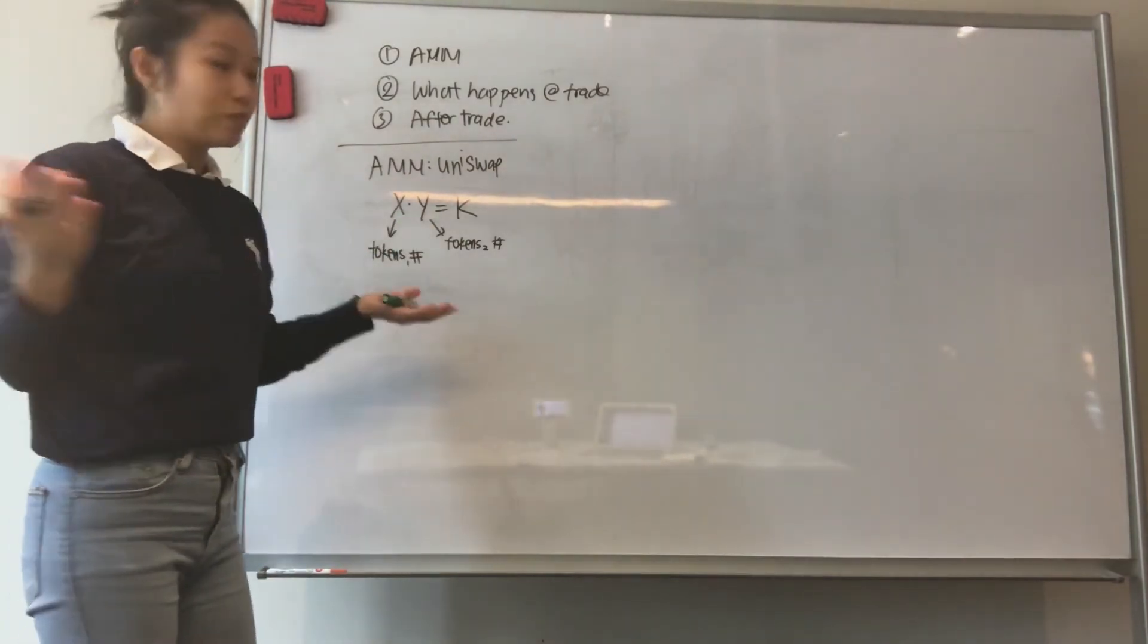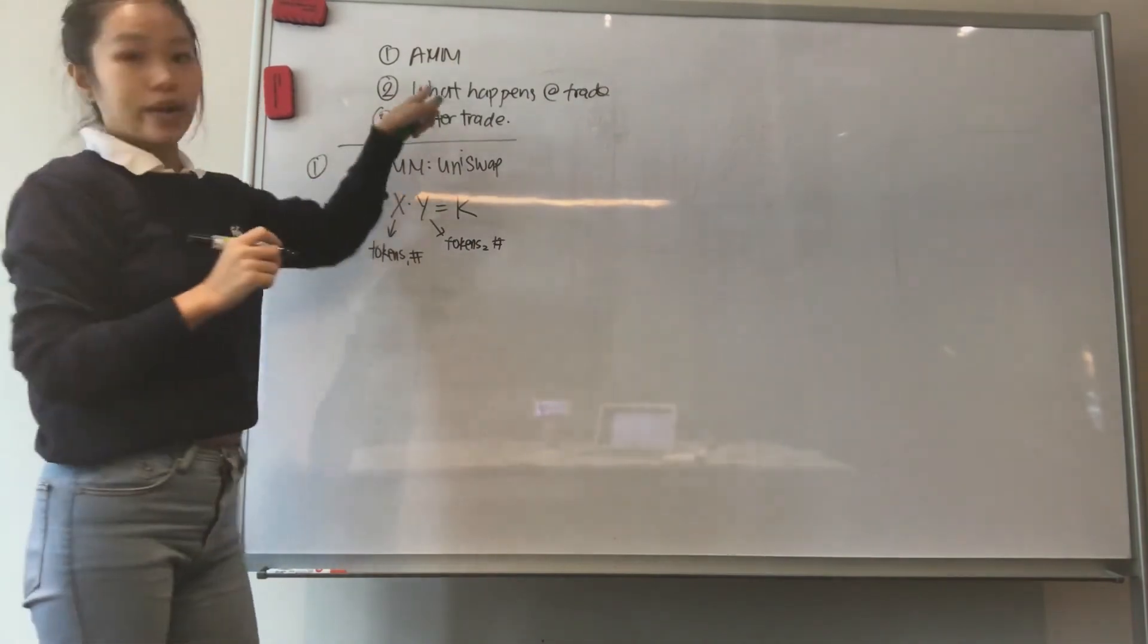So let's take an example, right? So that's number one, AMM. Number two, what happens at trade?